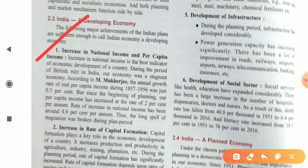National income, or GDP — gross domestic product — is the indicator of measuring growth or development of a country. If the national income of a country is increasing, it means the country is on the path of growth. From the post-independence period, our GDP is growing at a good pace. According to Professor M. Mukharji, the annual growth rate of real per capita income during 1956-57 was just 0.8%, but since the beginning of planning, per capita income has increased at 2% per annum, and the rate of increase in national income has been around 4.0% per annum — thus breaking the long spell of stagnation.